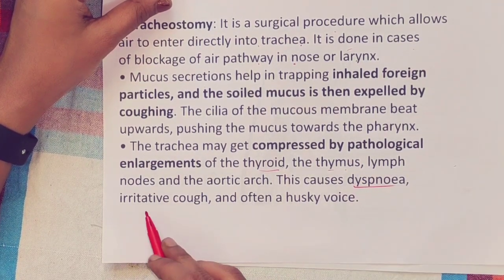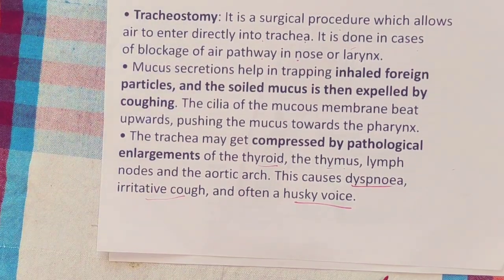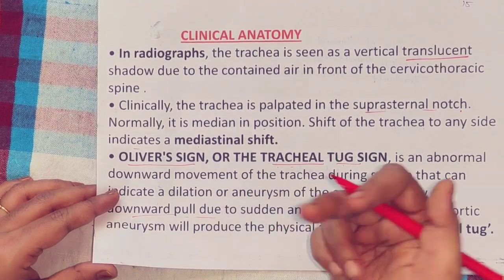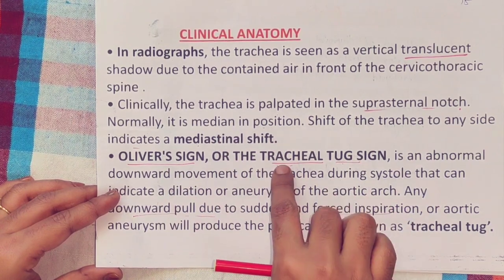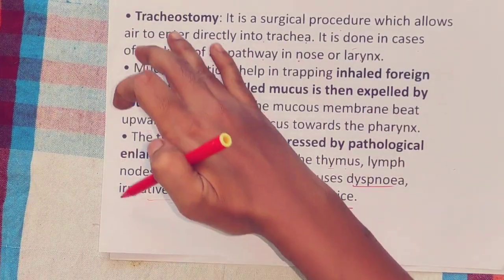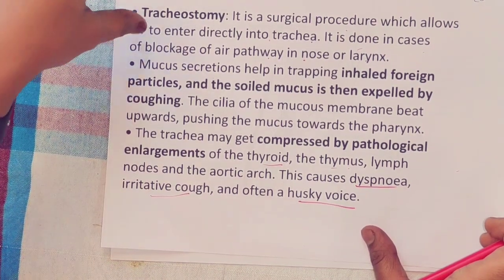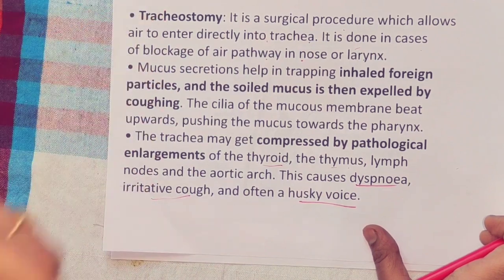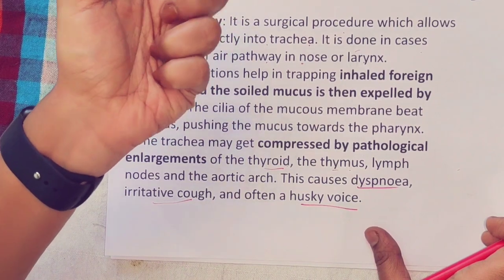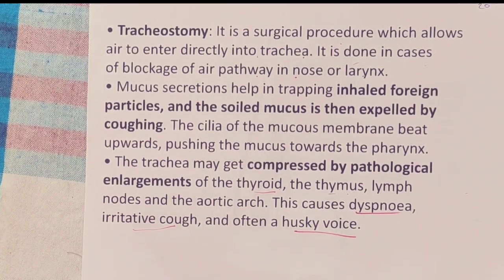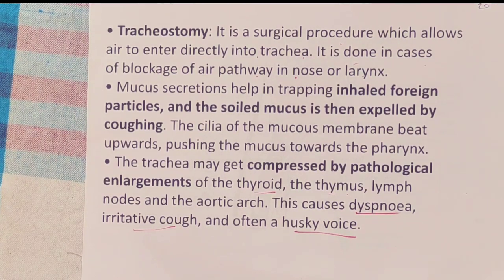Foreign bodies: when a foreign body is inhaled into the trachea, mucus is secreted to engulf it, leading to difficulty in breathing, irritative cough, and husky voice. This concludes the clinical anatomy section covering radiograph translucency, mediastinal shift, tracheal palpation, Oliver's sign or tracheal tug, tracheostomy, and foreign body effects. Thank you for watching. If you like the content, please like, share, comment, and subscribe. Leave any doubts or suggestions in the comment section below.